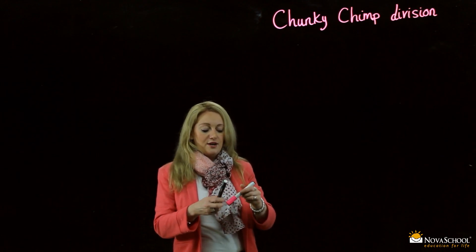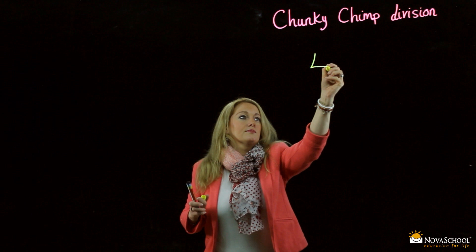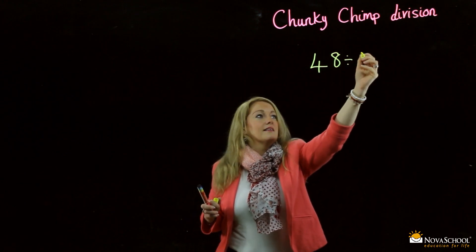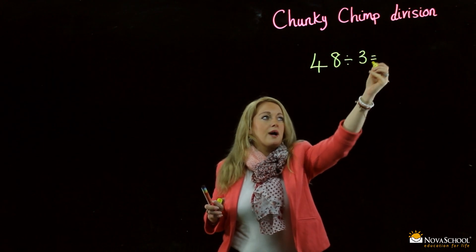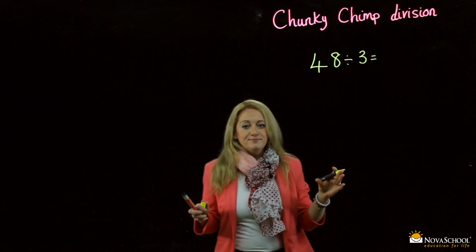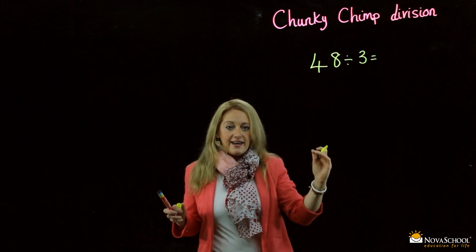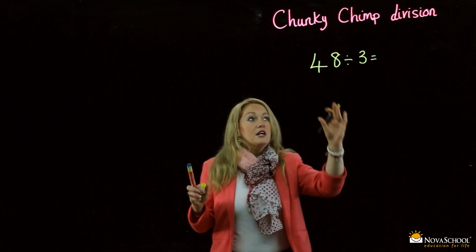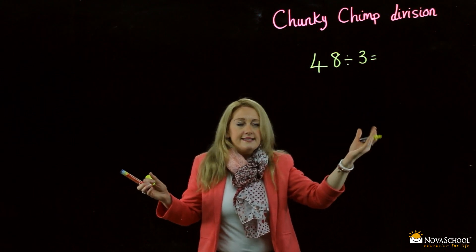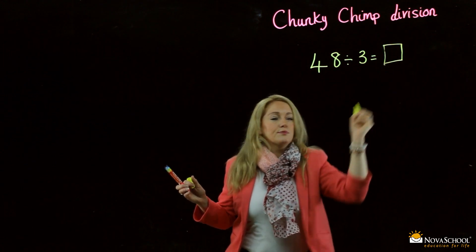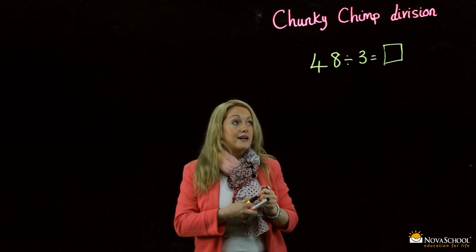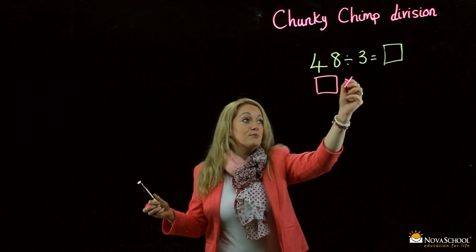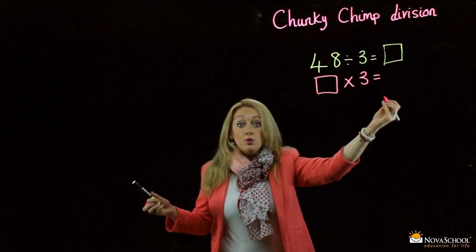Are we ready? I'll write the question out first. So we're going to look at 48 divided by 3. Now, this method is a few steps — we go down the page and we'll have a look at how it looks. 48 divided by 3 is — we draw a box. We don't know yet, we're going to work it out. But what we do know is: something in a box multiplied by 3 equals 48.